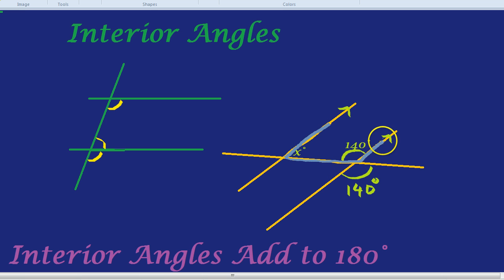What do we know about interior angles inside those parallel lines? Well, they add up to 180. So if the angle here is 140 degrees, angle X would have to be 180 take away 140, which is 40 degrees. So X is 40 degrees, and both angles indeed add up to 180 degrees.